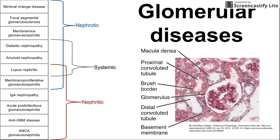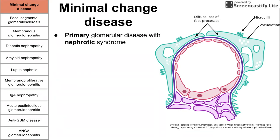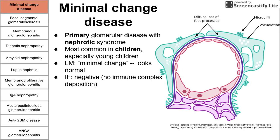Let's jump into the first one on the list: a nephrotic disease called minimal change disease. Minimal change disease is a primary glomerular disease with nephrotic syndrome. It's the most common in children, especially young children — if you see a young child in the case, you should automatically think maybe it's minimal change. On light microscopy, you do see a minimal change; that's where the name comes from — it looks pretty normal. The immunofluorescence is negative, so you do not see immune complex deposition.